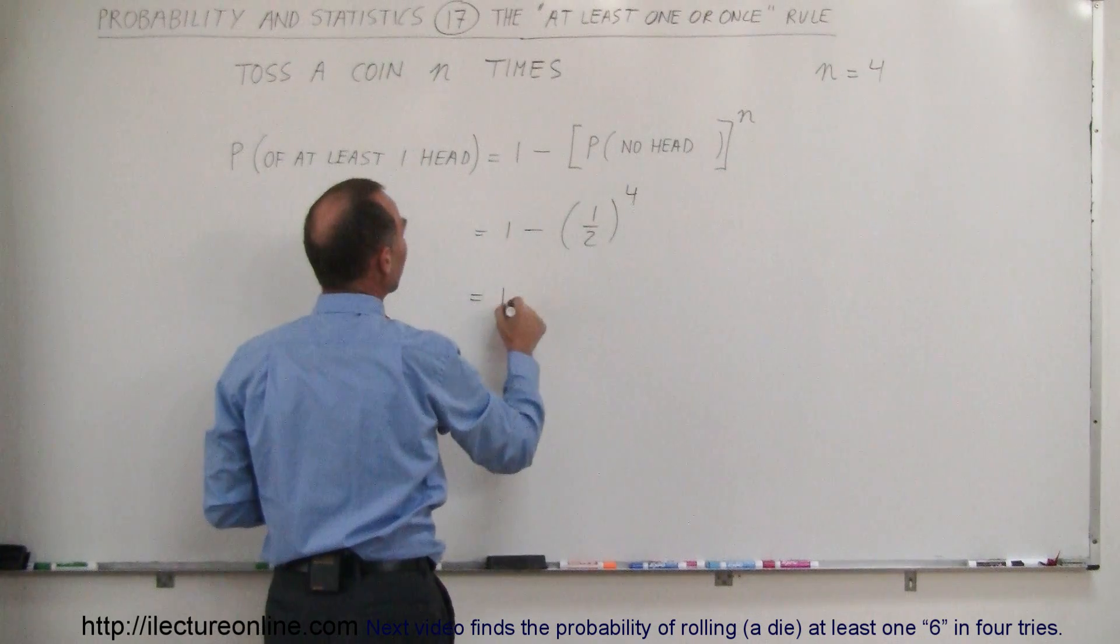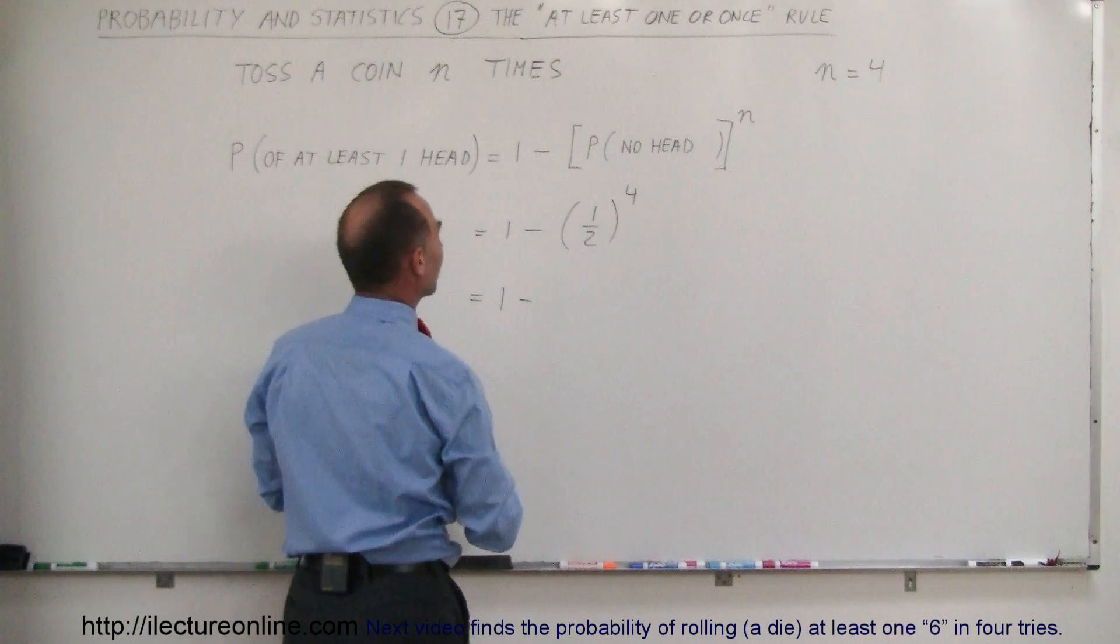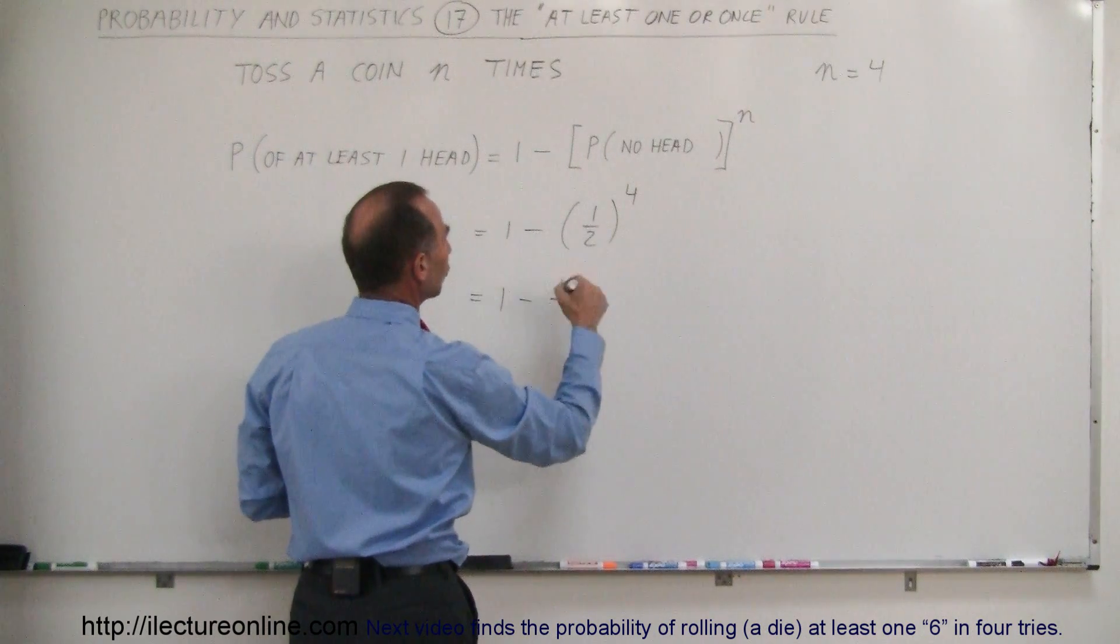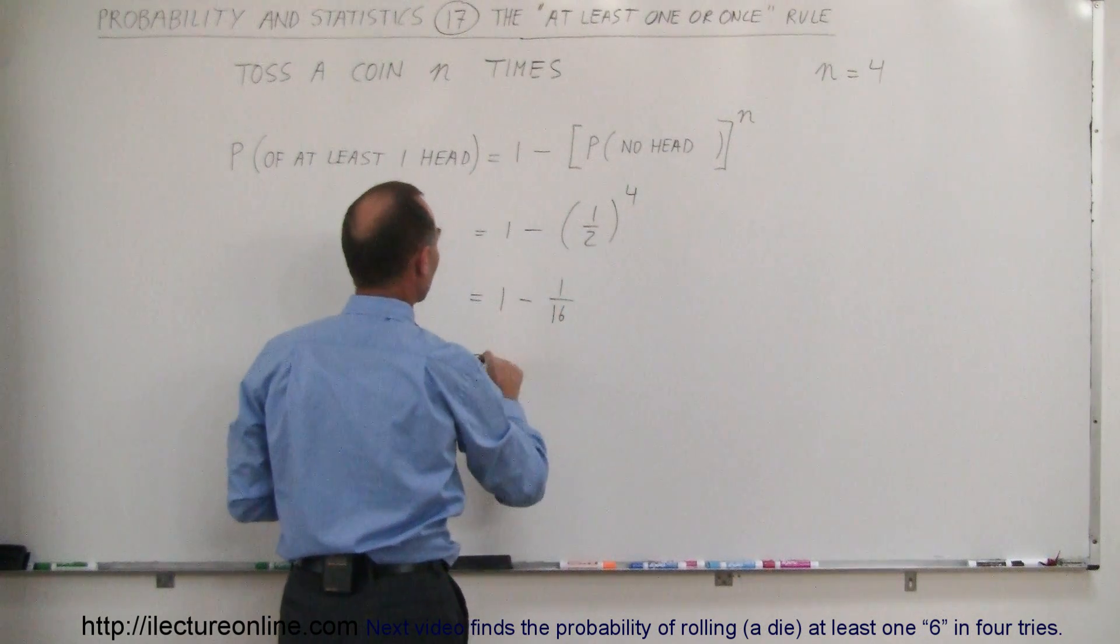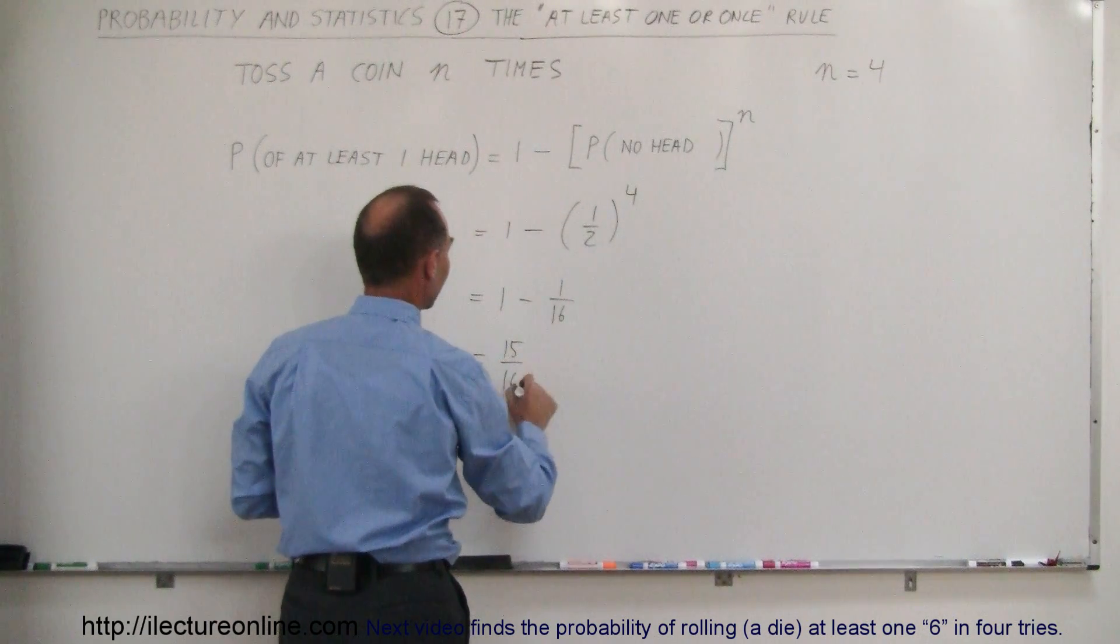So this will be one minus one half to the four. What is one half to the fourth power? Well, that would be one over sixteen, which is equal to one minus one sixteenth, which would be fifteen sixteenths.